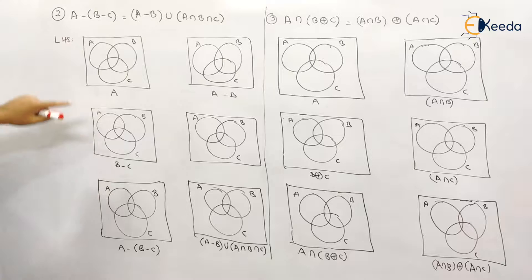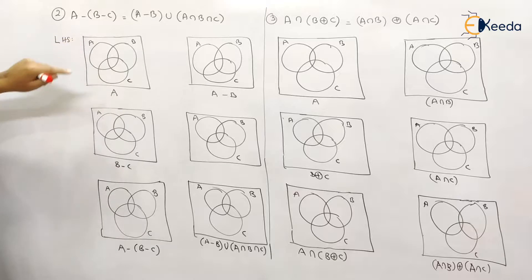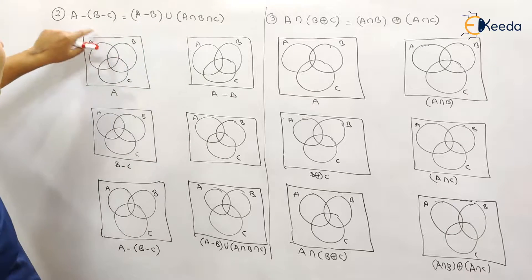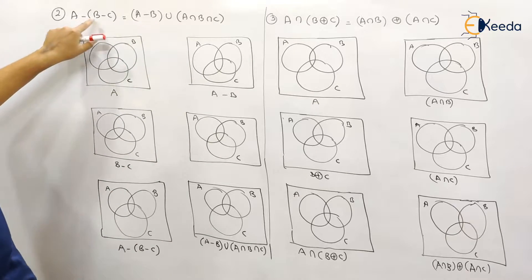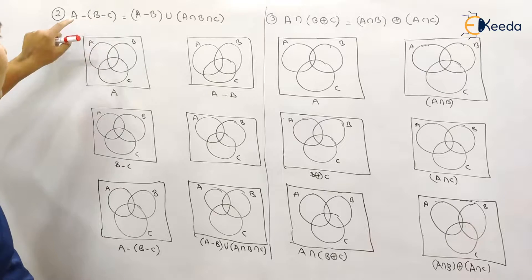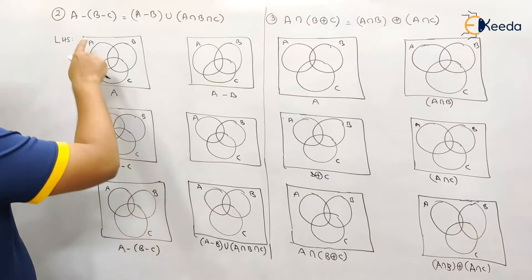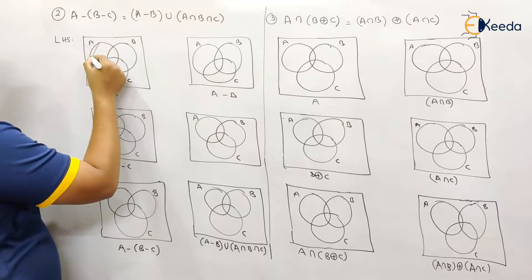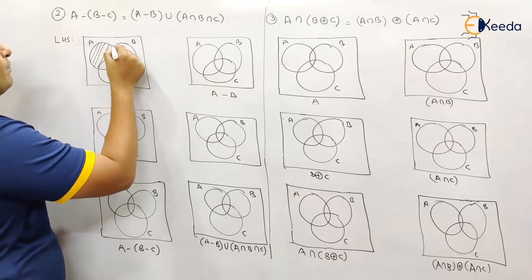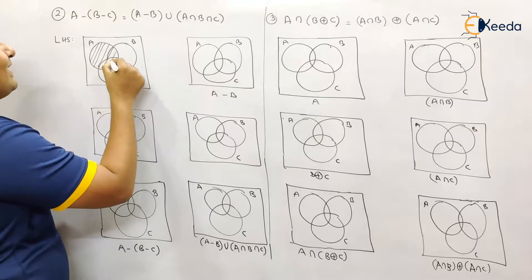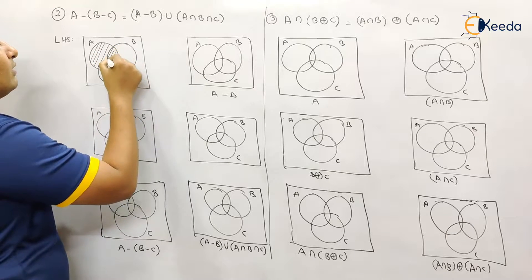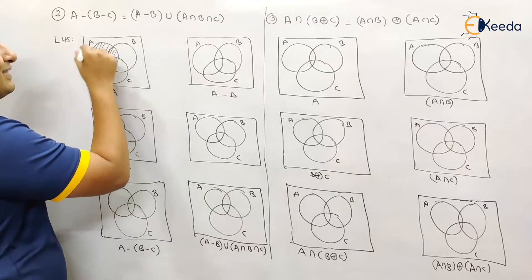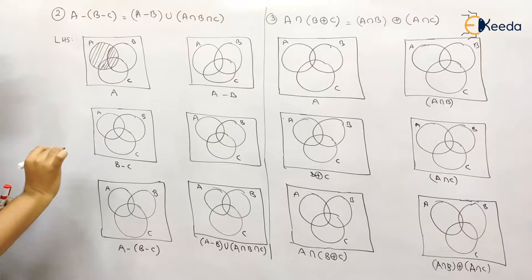In the first problem we need to prove LHS is equal to RHS. So this is your LHS, let us break it down. So A — let us shade A. This is my A. While shading A, don't bother about B and C, just shade A as it is.